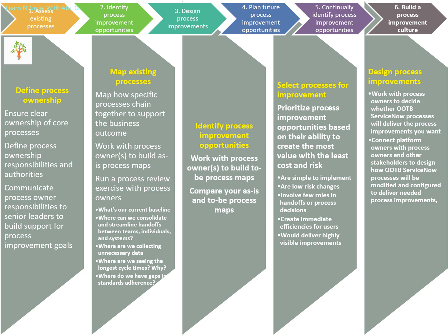Communicate process ownership responsibilities to senior leaders. Improvement plans often fail because people see document updates as an overburden. The reason is we don't follow the right approach — we assign a process owner without giving them top management support. We must clearly tell senior leaders who the process owner is and that we need their support to achieve improvement goals. Once done, start mapping the existing processes — map how specific processes work together to support business outcomes.